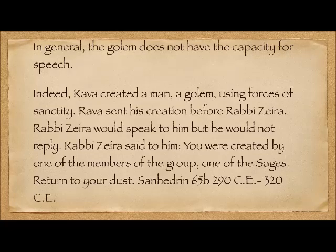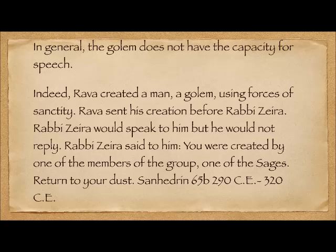Ravah created a man — a Golem — using forces of sanctity. Ravah sent his creation before Rabbi Zaira. Rabbi Zaira would speak to him, but he would not reply. Rabbi Zaira said to him: 'You were created by one of the members of the group — one of the sages. Return to your dust.'